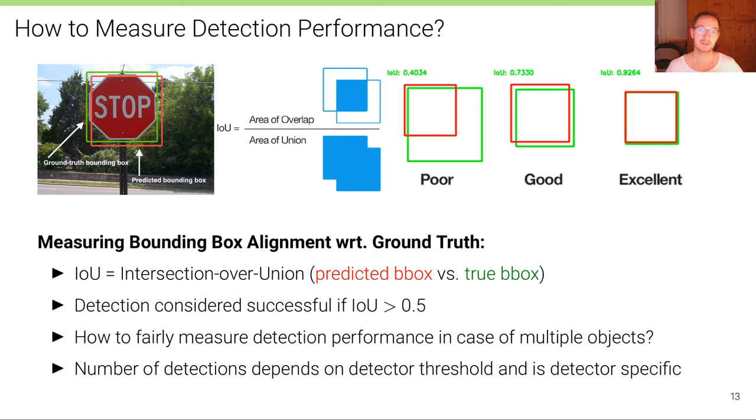And now depending on the threshold that we choose, the confidences that we still allow to be counted as detections for that particular object detector, we can vary the amount of bounding boxes that are output of that detector for a particular image. And so the number of detections depends on this threshold.